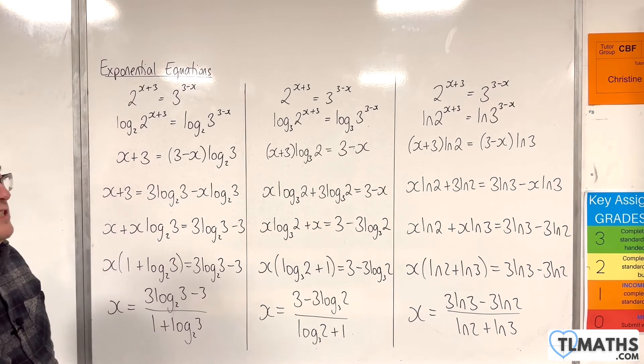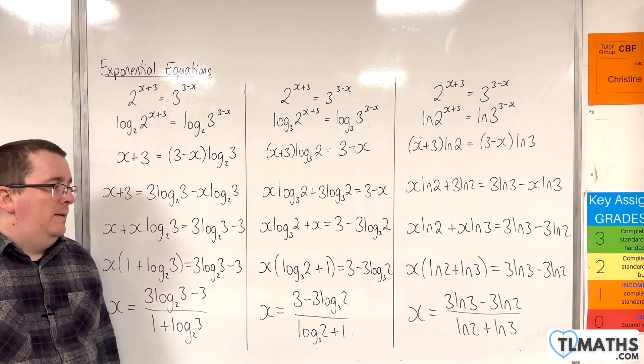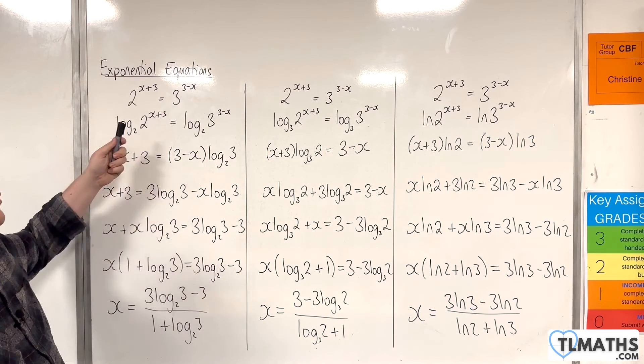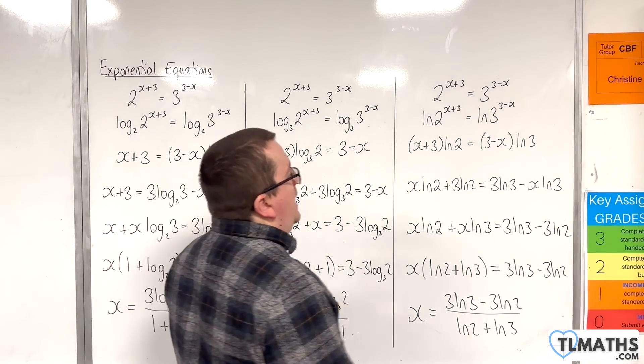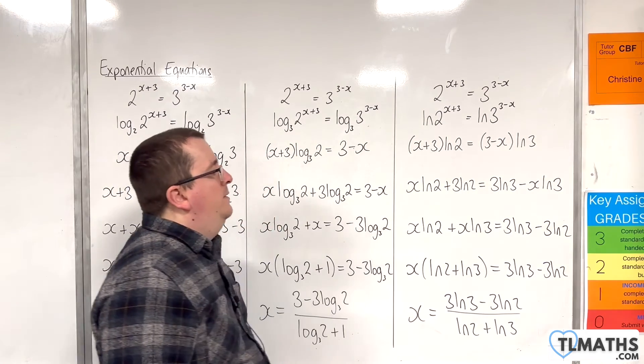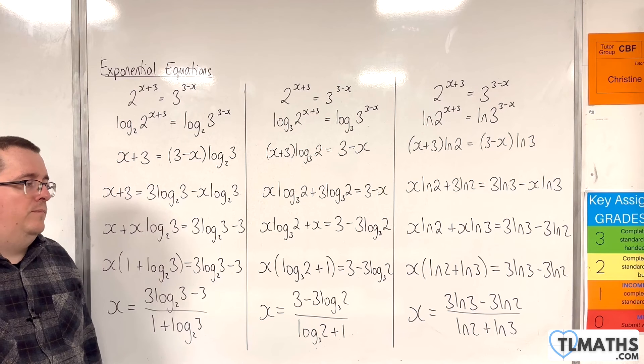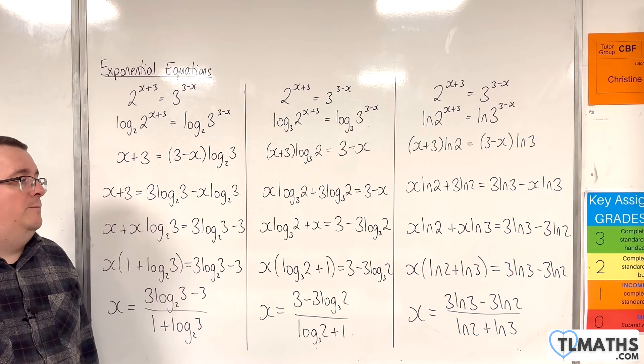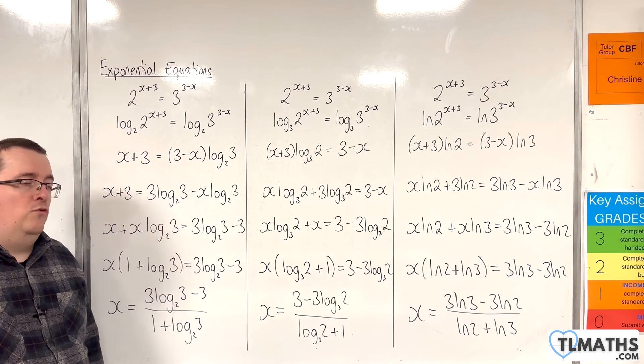Now, there's nothing stopping you using base 10, or base 20, or base 100 if you really wanted to, but here are three possible options. Using base 2 or base 3 makes sense, because we've got 2 to the power of and 3 to the power of, but the natural log here is quite easy to write down. Don't get put off by the fact that you've got a slightly different answer to maybe what you're seeing in a mark scheme. But it will allow any correct, fully correct answer here.